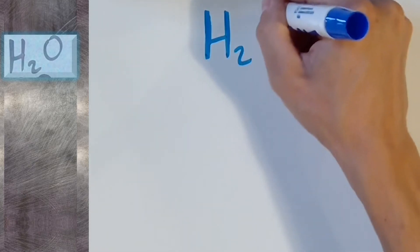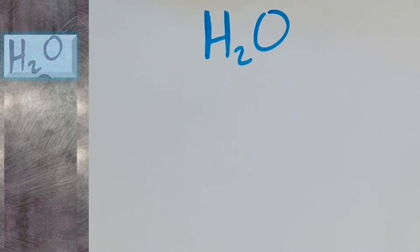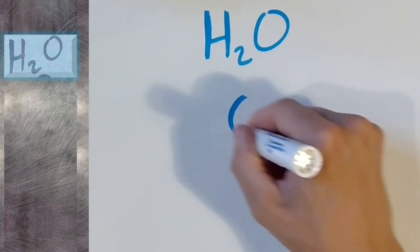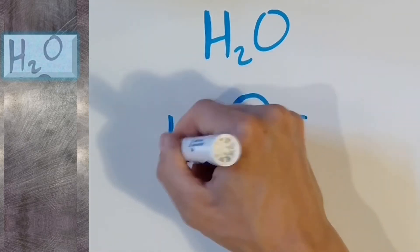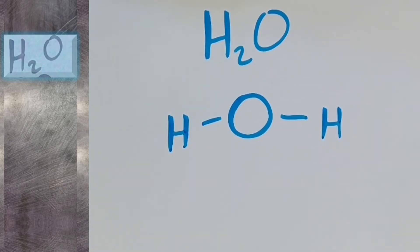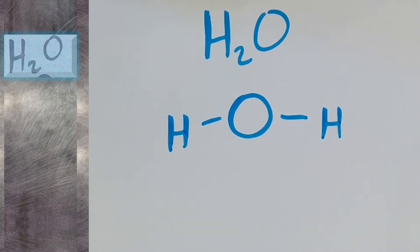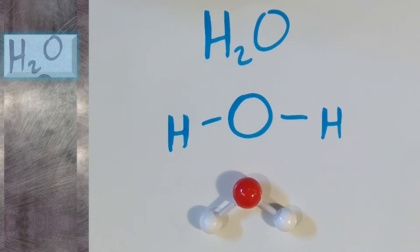Let's start with water, our most famous molecule. Its molecular formula is H2O. This means that water has two hydrogens and one oxygen, which are all bonded together. Here is the molecular structure for water. Notice that each hydrogen is connected to the oxygen with one bond. Oxygen is here in the middle, and it has two bonds. For each molecule we explore, we will also show you a three-dimensional model that we built using a molecular modeling kit. This is the three-dimensional model for water.